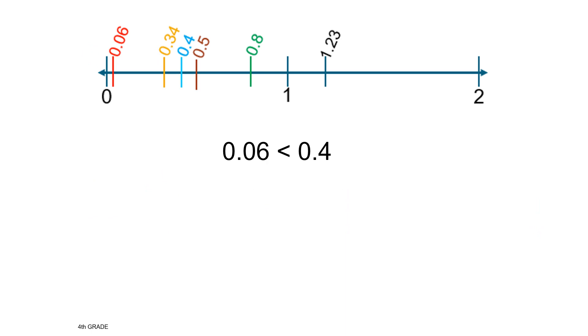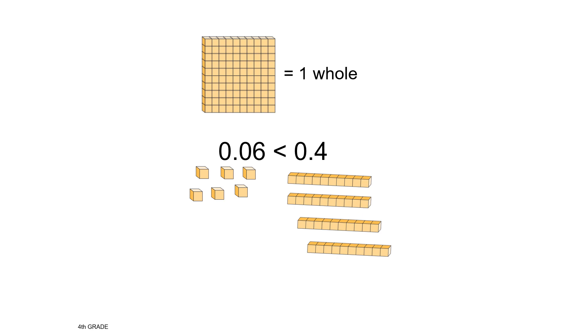According to the number line, 0 and 6 hundredths is less than 0 and 4 tenths. How can a number with a 6 be less than a number with a 4? Mathematicians communicate their reasoning, so share your thinking out loud. To answer this question, it is helpful to think about the value of each number. If I think about the flat block as the whole, and then think about what each number represents, I can see that 0 and 6 hundredths is less than 0 and 4 tenths.